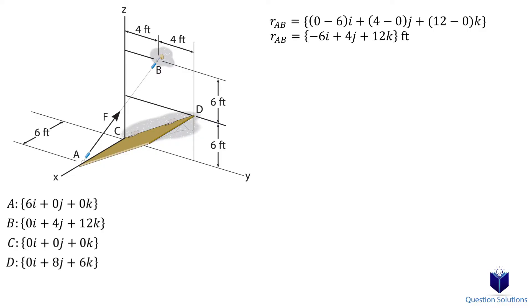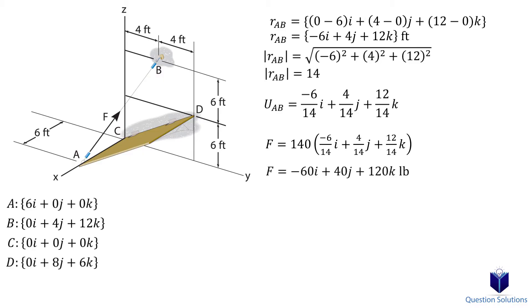Next, we need to figure out the magnitude of this position vector. Now that we have the magnitude, we can write a unit vector. It is now time to express the force in Cartesian form by multiplying the force by the unit vector, which gives us -60i + 40j + 120k. That's the first step done.